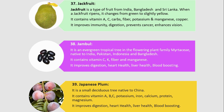Number 39. Japanese plum. It is a small deciduous tree native to China. It contains vitamin A, B, C, potassium, iron, calcium, protein and magnesium. It improves digestion, heart health, liver health, and blood boosting.